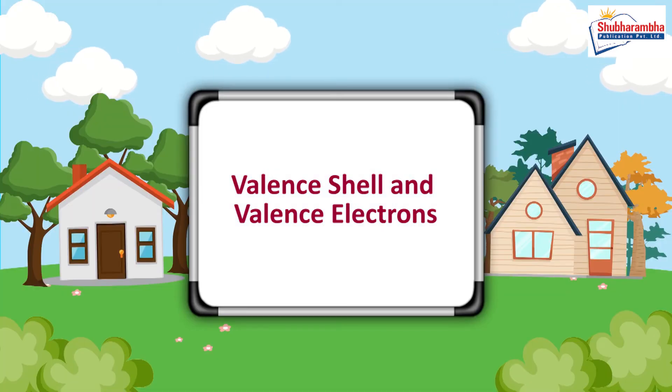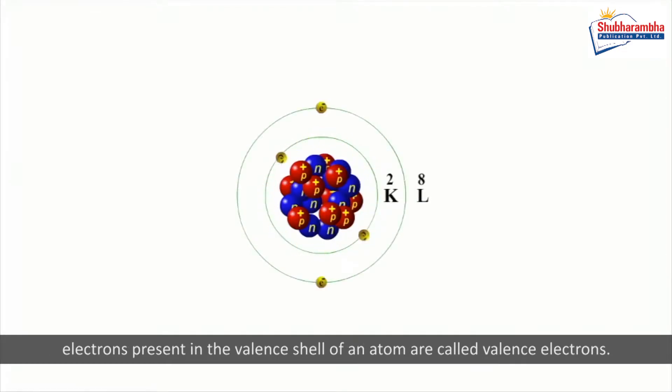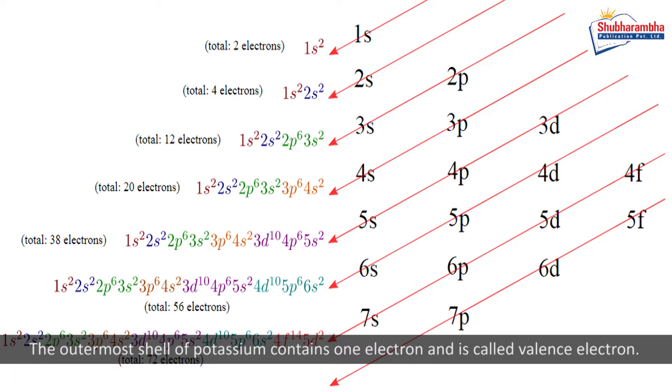Valence shell and valence electrons. The outermost orbit or shell of an atom is called valence shell, and the number of electrons present in the valence shell of an atom are called valence electrons. The outermost shell of potassium contains one electron and is called the valence electron. During chemical reactions, this valence electron of potassium atom is transferred to the valence shell of another atom.